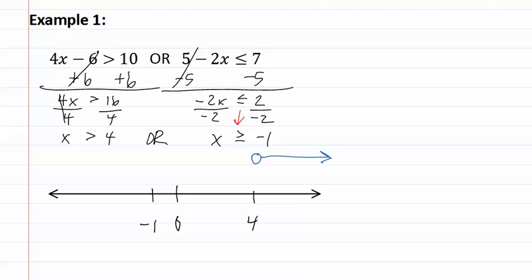Next, we have x is greater than or equal to negative one which means a closed dot that also goes to the right.